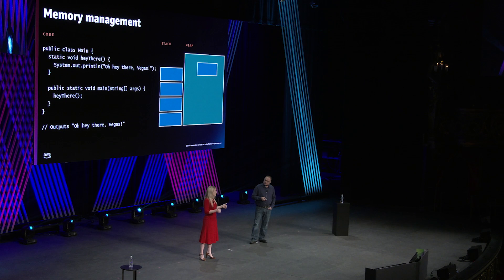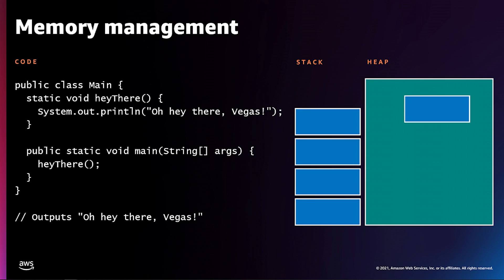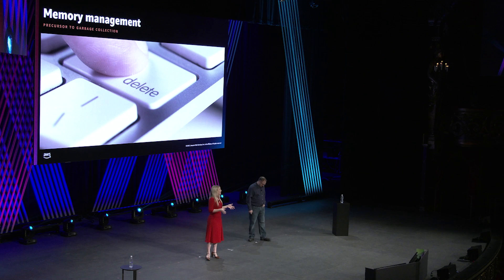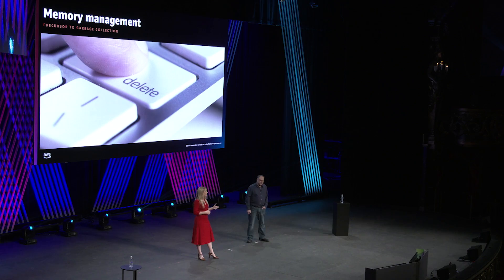The heap stores global variables, and memory is not automatically deallocated because a global variable will never go out of scope. The heap is the everything drawer of your application — large memory is allocated randomly and everything is just sort of shoved in. You can still run out of memory. In lower-level languages, you must delete global variables manually or you'll create a memory leak, which is essentially a degradation of performance due to fragmented RAM. That requirement — and the fact that humans are terrible at remembering to do repetitive tasks — is why garbage collection is so important.